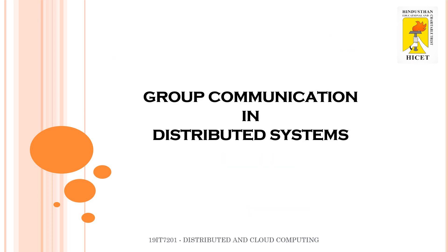In this session, we are going to talk about group communication in distributed systems — that is, how communication takes place in the distributed system to achieve its objectives. One of the major objectives is synchronization, and we will see how group communication helps to achieve synchronization in the distributed system.